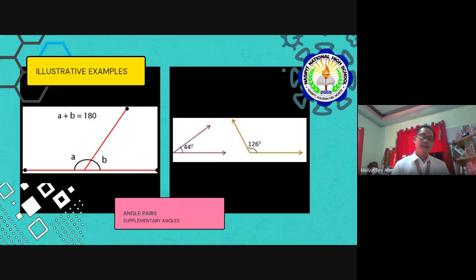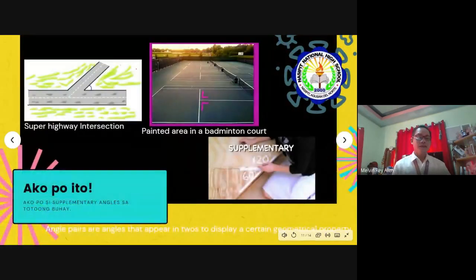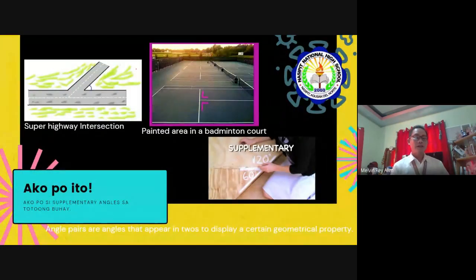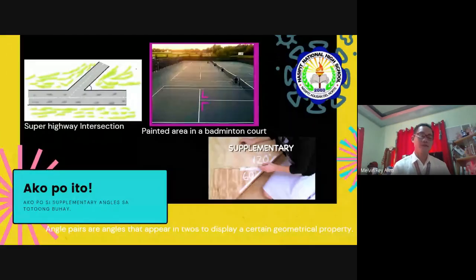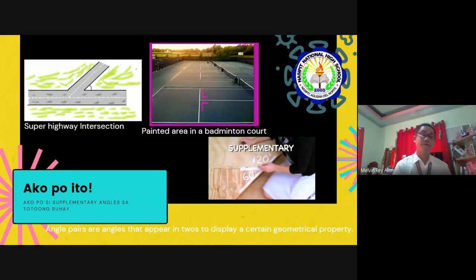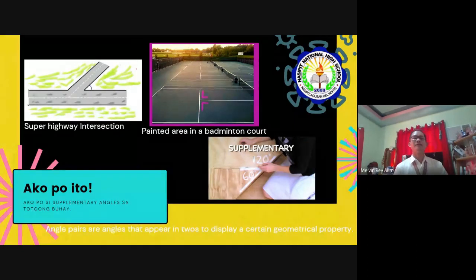Even if the two angles were not together, in this slide, are the common things we see outside or even outside our house. We have the superhighway intersection, our dependent area of admin report, or even the portion of the floor in your house or in a pile portion in your house.